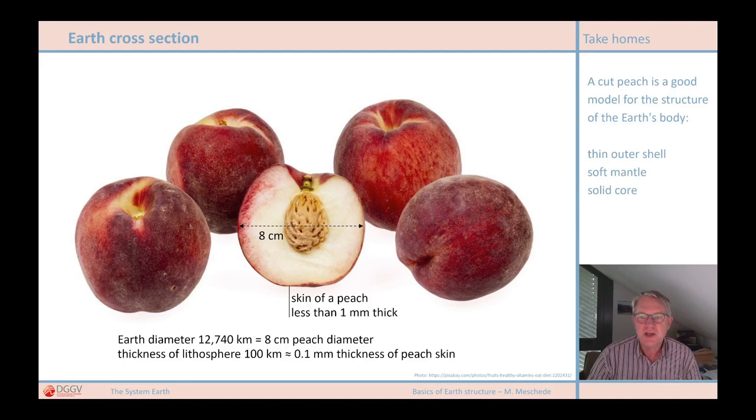If we convert that to the size of a peach, which is a simple rule of three calculation, that would correspond to a skin of approximately 0.1 mm. That is one tenth of a millimeter. We see what thin ice we are actually walking on our Earth. I always say it's the ride on the ball of fire.